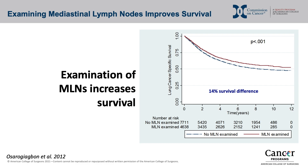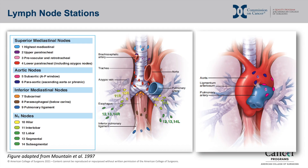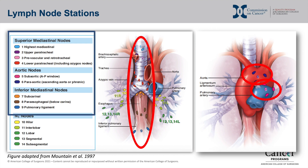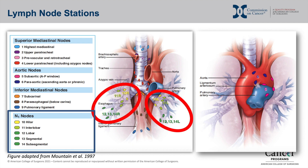The new standard for resection of pulmonary cancers is based on this and other data. These illustrations demonstrate the lymph node stations referenced in this standard. Mediastinal lymph node stations include stations 2 through 9, and the standard requires sampling of nodes from at least three distinct mediastinal stations. Hilar stations include stations 10 through 14, and the standard requires resection of nodes from at least one of these hilar stations.